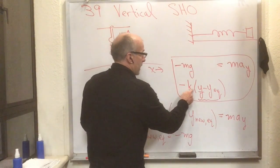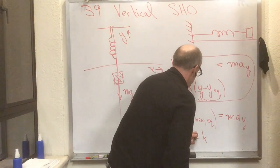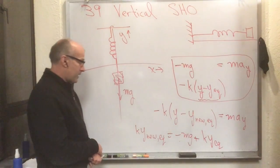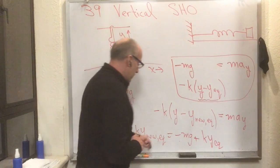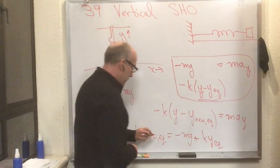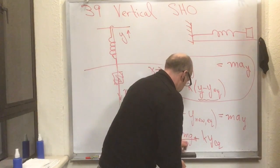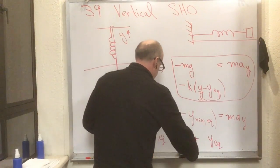So that tells us the relationship between the new y_eq and the old y_eq. I can divide everything through by k. I can subtract off y_eq from each side.